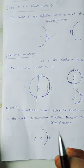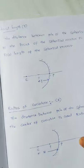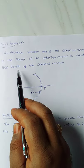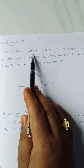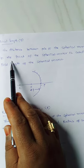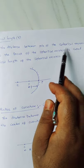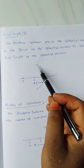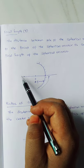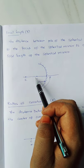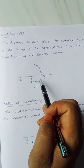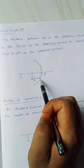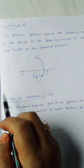Next one is focal length. Focal length is the distance between the pole of the spherical mirror and the focus of the spherical mirror. For example, in a concave mirror, we have the pole, center of curvature, and focus. The distance between the pole and the focus of the spherical mirror is called the focal length.